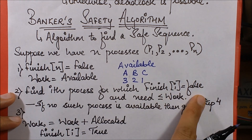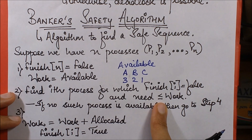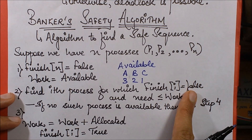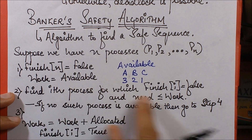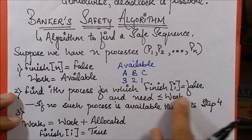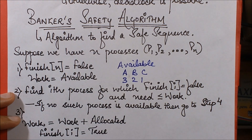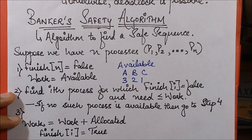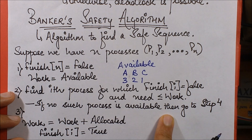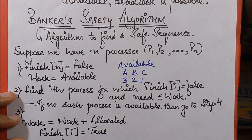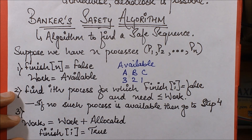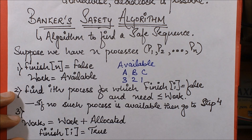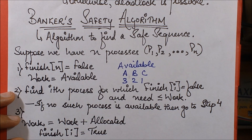The next step is to find the i-th process for which Finish[i] equals false and Need[i] is less than or equal to Work. Need less than or equal to Work means the process's need can be fulfilled by the currently available resources. If no such process is found, go to step four. If Finish[i] is not false — meaning the process has already been worked upon — or Need exceeds Work — meaning available resources are insufficient — we exit the algorithm.